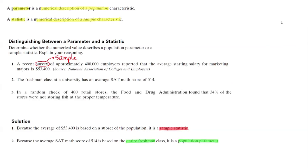Finally, in a random check of 400 retail stores, the Food and Drug Administration found that 34% of stores were not storing fish at the proper temperature. So here you have another keyword: random. When you say random, it means you randomly checked those, not all of them are included. So it represents a sample. Now that you have a sample, it means you have sample statistic. 34% is based on a subset of population, the same as in the first question.